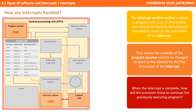The interrupt service routine is simply a program with its own set of instructions that need to be fetched, decoded, and executed to carry out the operations of the interrupt. That means the contents of the program counter need to be changed to point to the address for the first instruction of the interrupt.